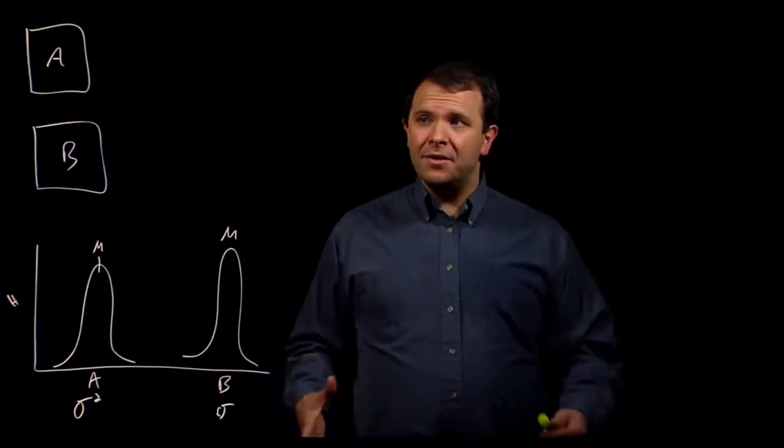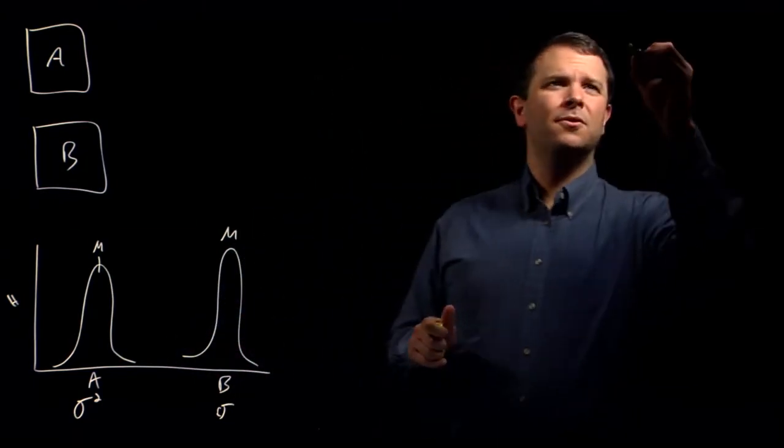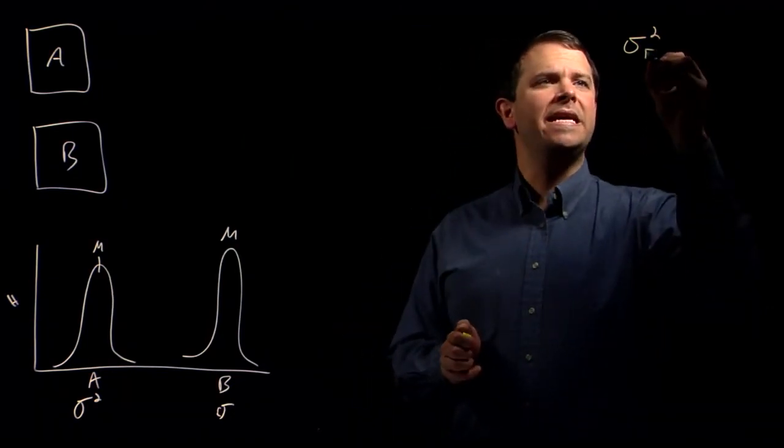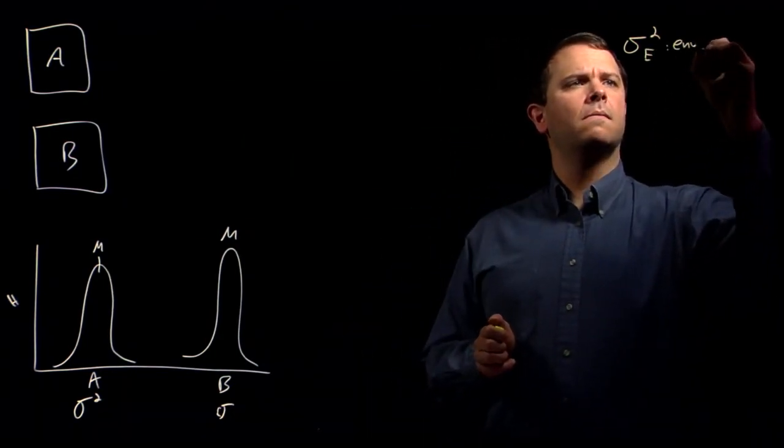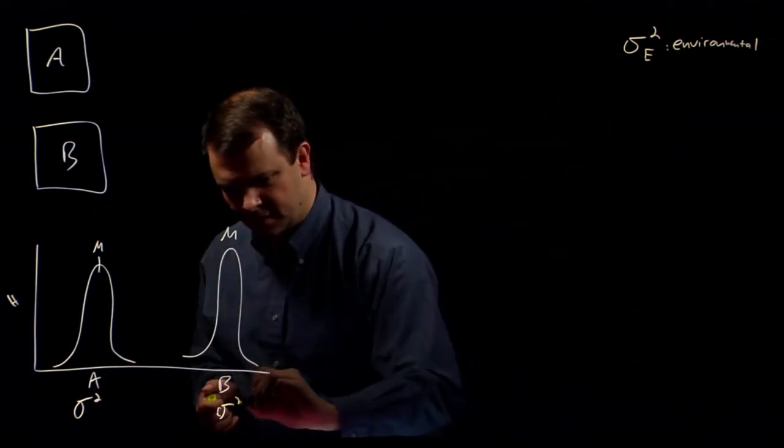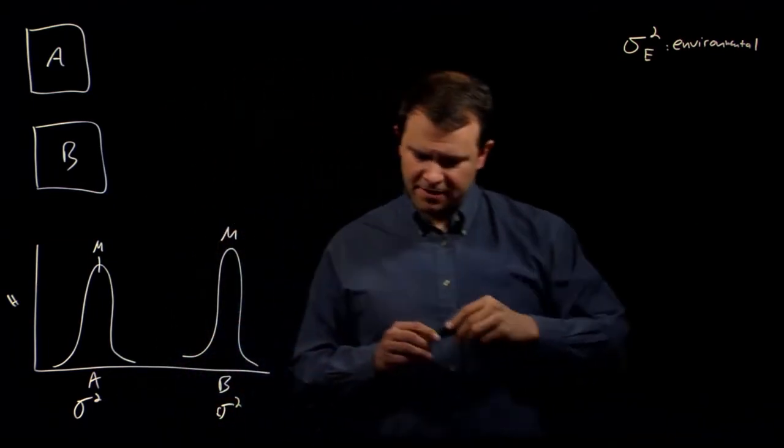And this kind of environmental variance we'll call σ²E. Sorry, those should definitely have squares on them.